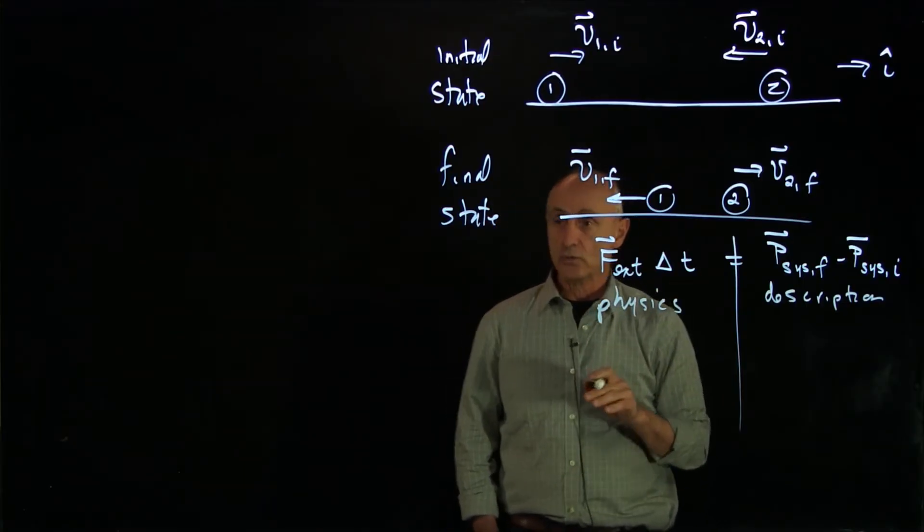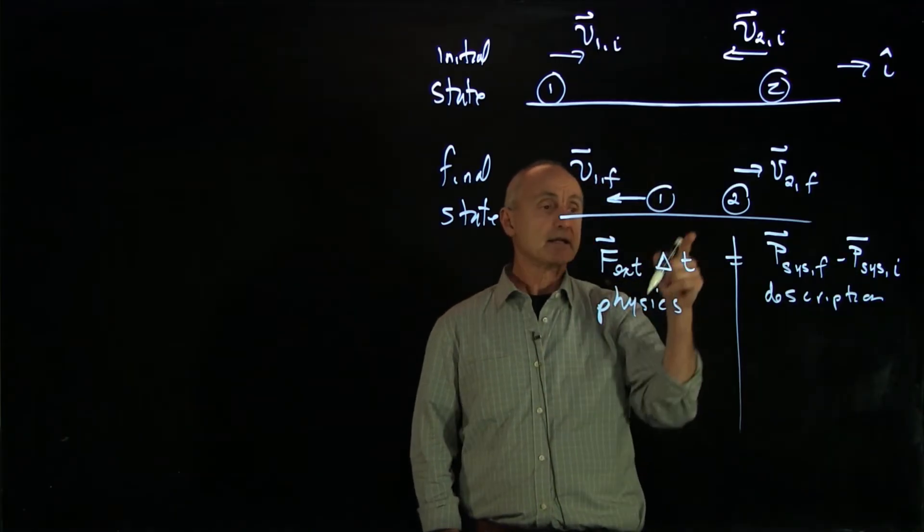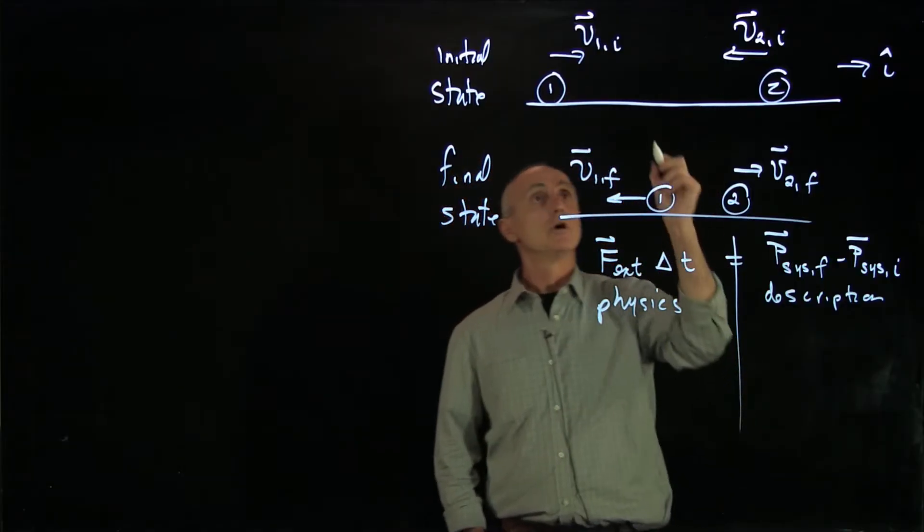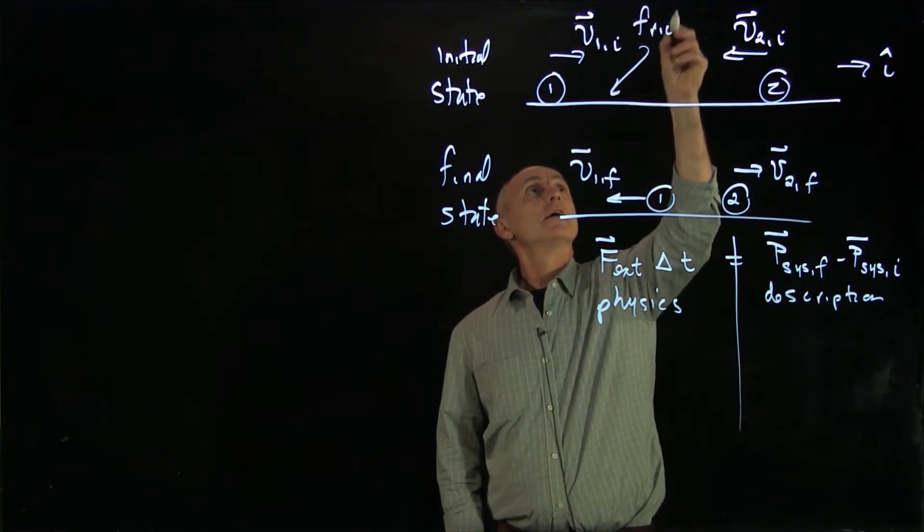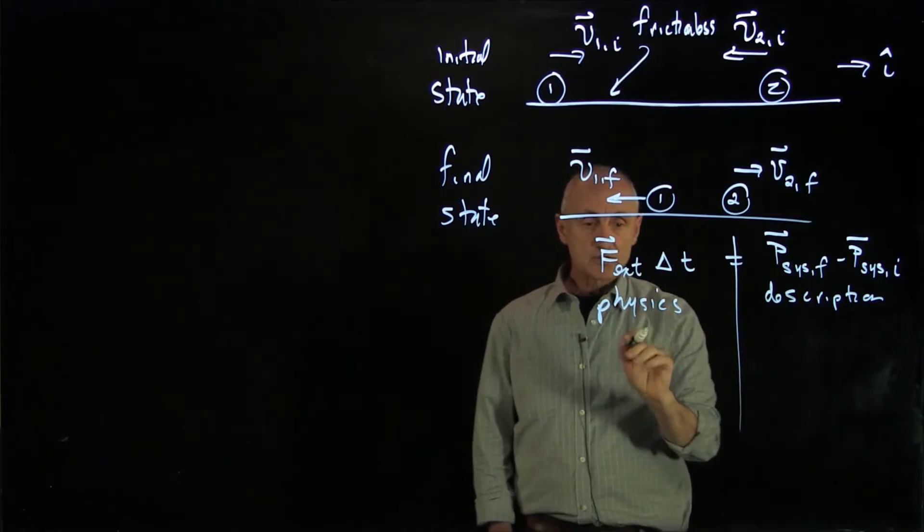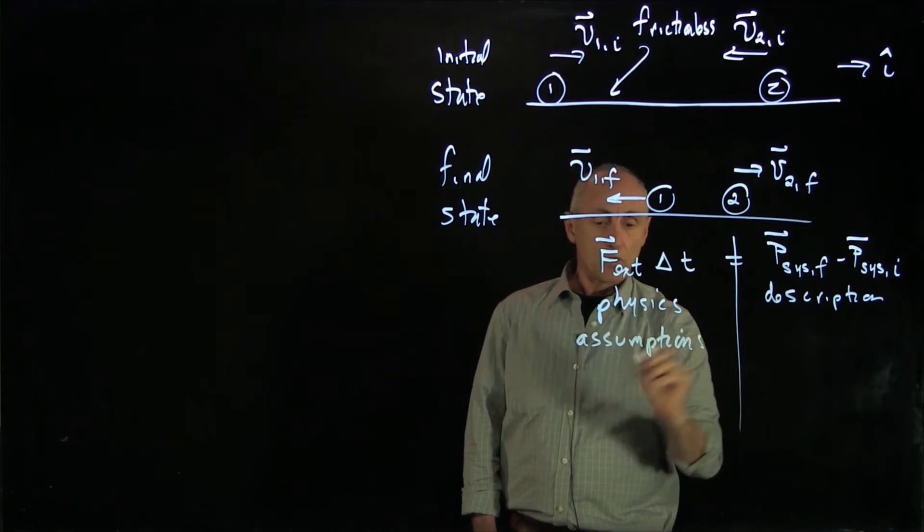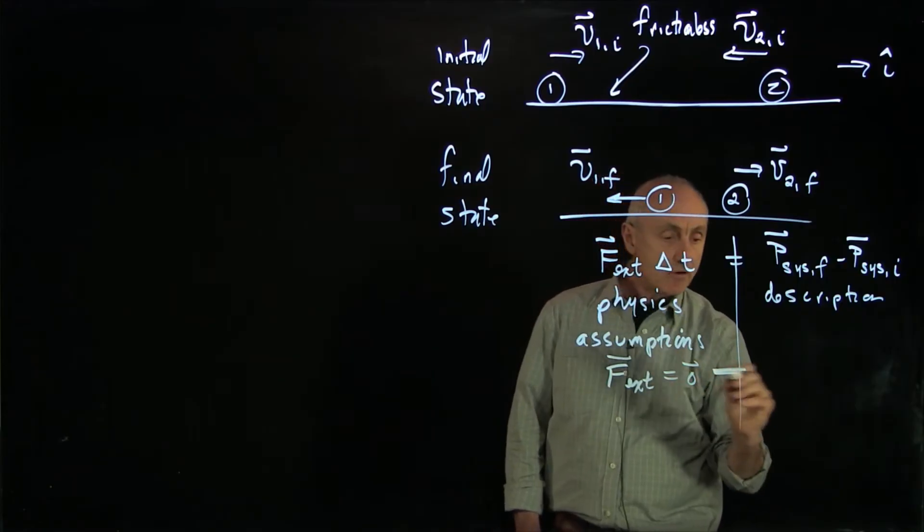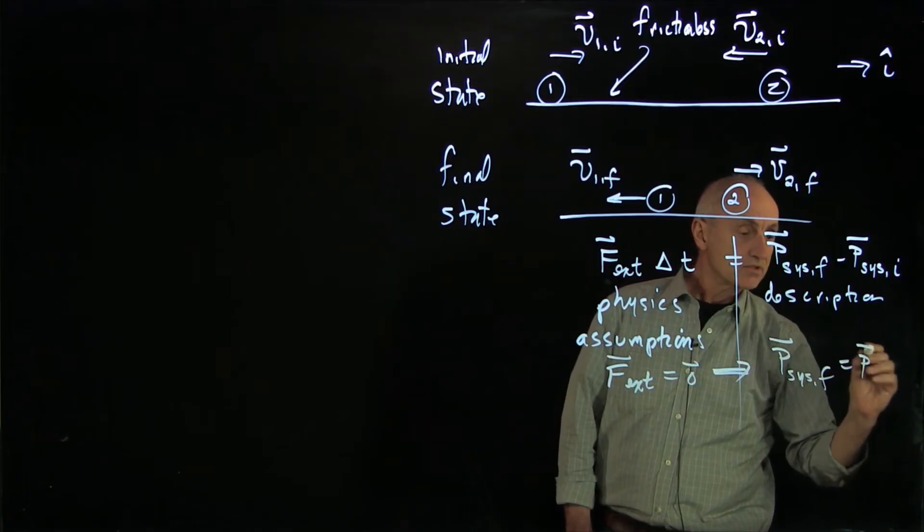Now for our one-dimensional collision, we need to look at this collision and ask ourselves, are there any external forces acting on the system, which is consisting of particle 1 and particle 2? So what we're going to identify here is that this surface is frictionless, and we'll ignore all air resistance. And so by our assumptions that there are no f external is 0, and therefore the momentum of the system remains constant.